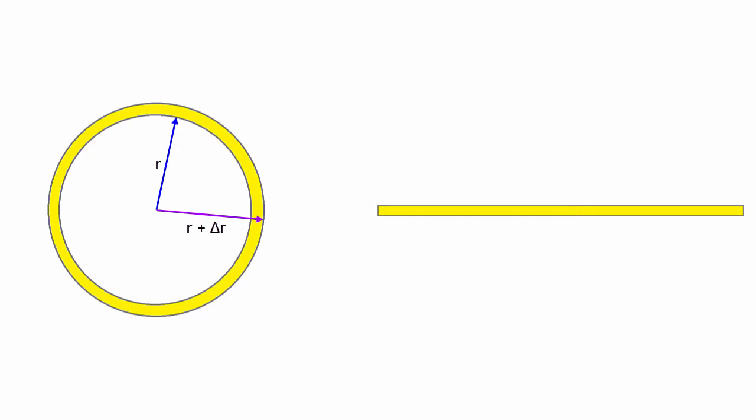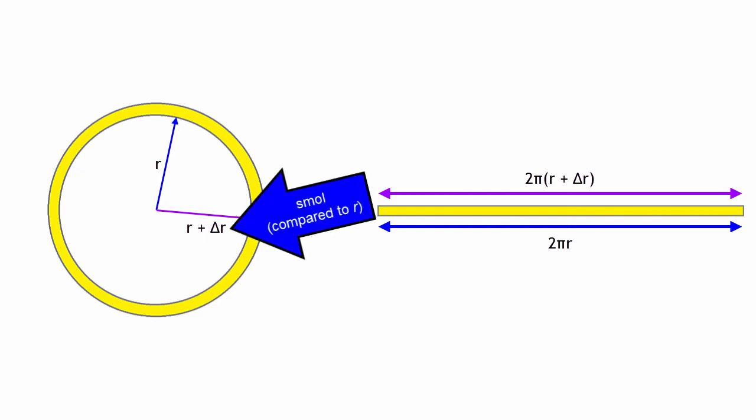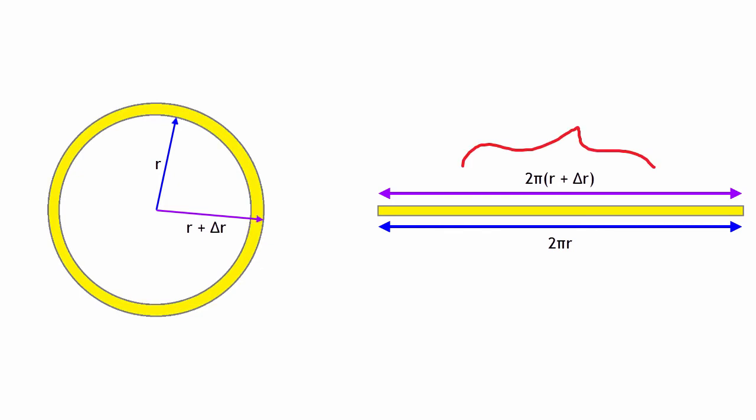But because we want these layers to be really, really thin, we want the thickness of these layers to be almost zero. So we want delta r to be really, really small and really, really small compared to the values of r. And so this side here, 2 pi r times delta r is almost the same as 2 pi r where we ignore the delta r. Hence, we can approximate these rectangles to just rectangles.